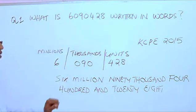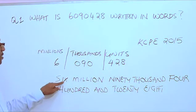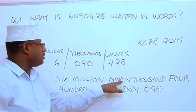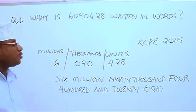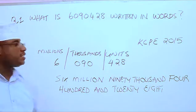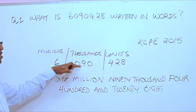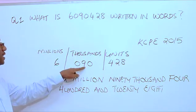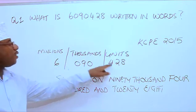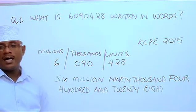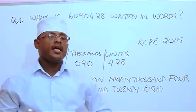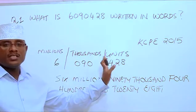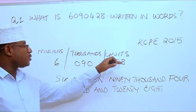So we write it in words: six million ninety thousand four hundred and twenty-eight. Very easy — you can read it straight from the place value table. Any number you get, no matter how big, just put it into units, thousands, and millions.